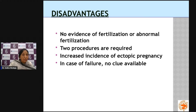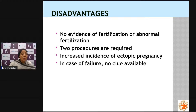The technique involves two procedures — one to remove the egg and another to transfer. There is an increased risk of ectopic pregnancy because if the tube is unhealthy the embryo may implant there. If the procedure fails, we don't know exactly why — just as in natural conception where we cannot determine the cause of non-conception.